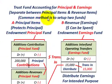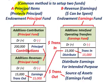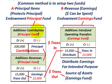For trust fund accounting, we separate principal items from revenue or earning items using two funds. Fund A is the endowment principal fund, where you protect the principal. It contains an account called 'additions and contributions' — for example, a $200,000 contribution received in trust is debited to additions and contributions. There's also an 'additions to revenues' account, which records the earnings generated by the principal — say $15,000 earned for the year on a $200,000 principal.